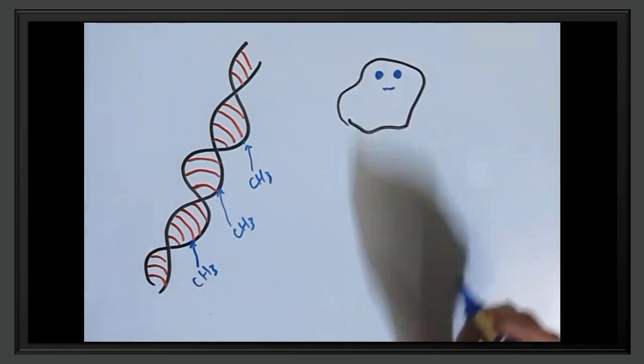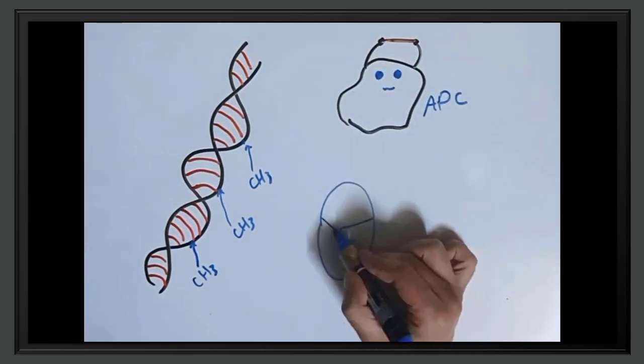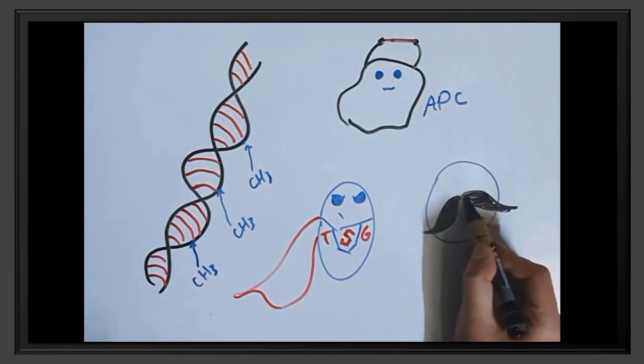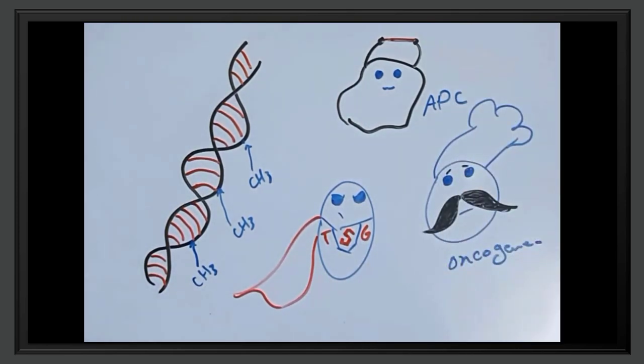Some of these steps include: number one, loss of antigen-presenting cells; number two, DNA hypomethylation; number three, activation of oncogenes; and number four, loss of tumor suppressor genes.